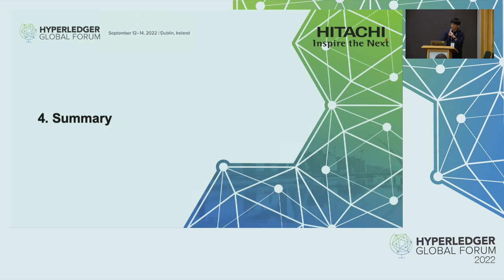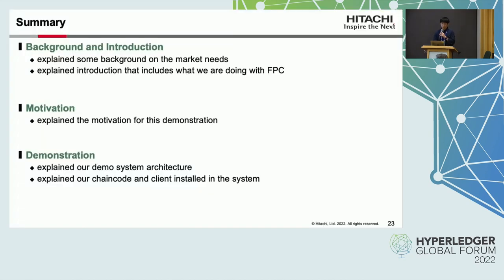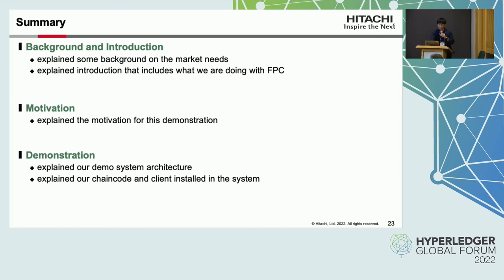Finally, I will summarize my presentation. In the background and introduction section, I explained some background on market needs and introduced what we are doing with Fabric Private Chain Code. Next, I explained the motivation for this demonstration. Finally, I explained our demonstration architecture, our chain code, and the client program installed in our system.